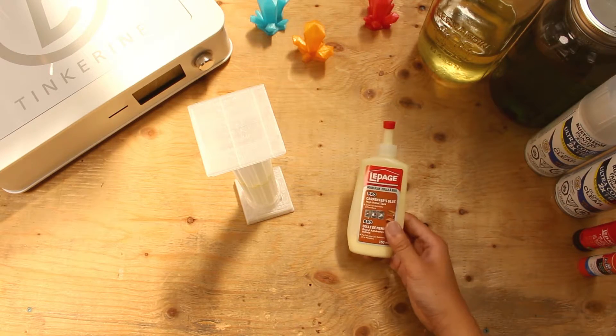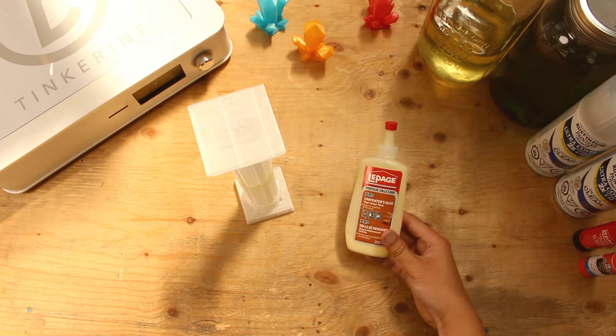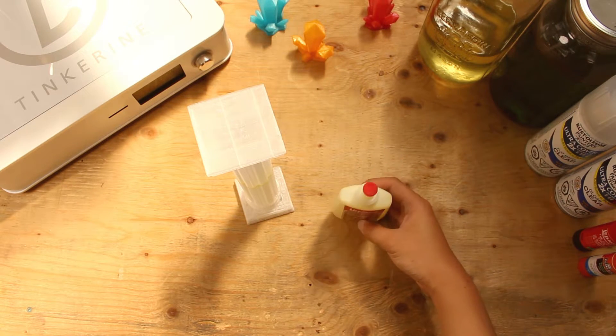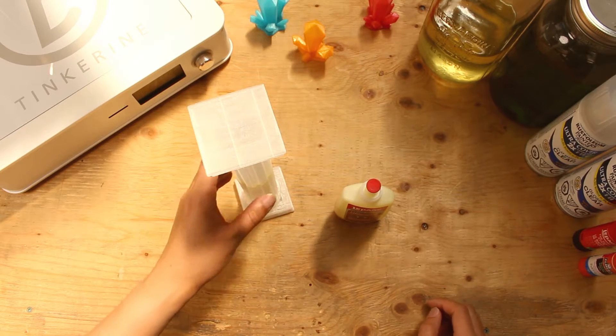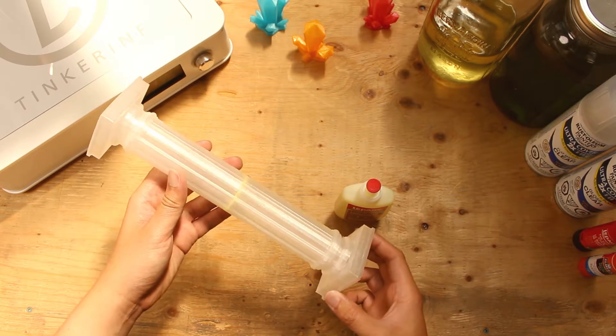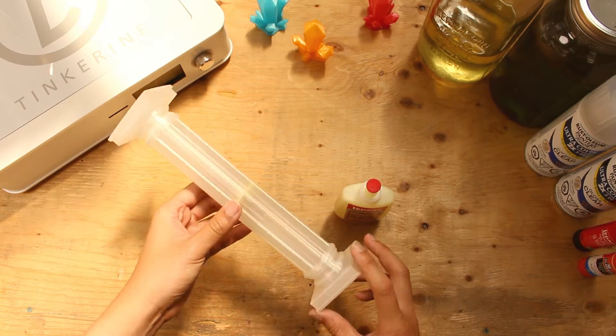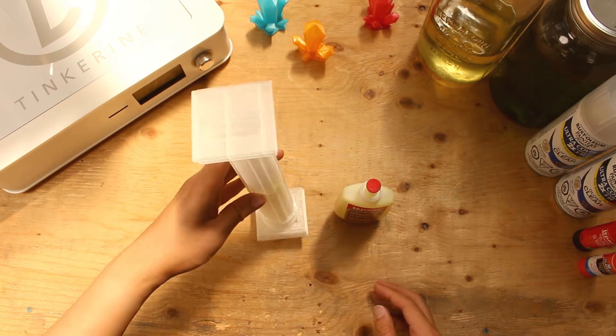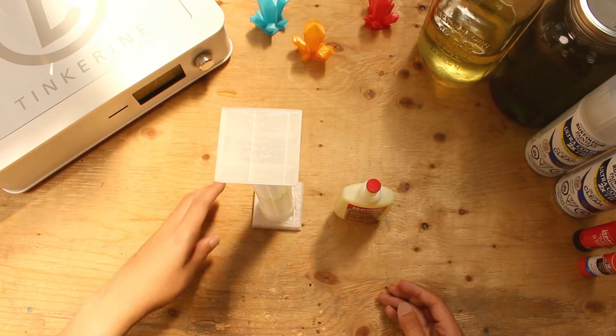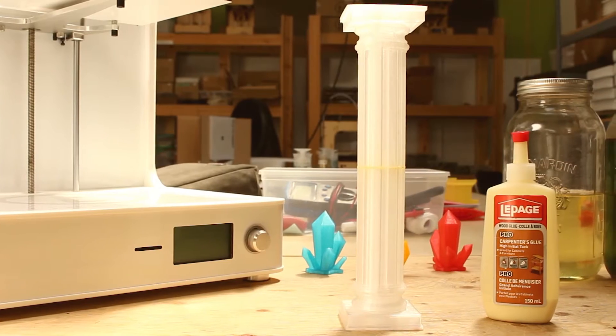This time we revisited wood glue and it actually stuck on properly. However, I'm still a little bit iffy about it because of the noises that were there when I was pulling it apart. It was like cracking under pressure. So would I recommend using wood glue to stick PLA parts together? I don't think I will.